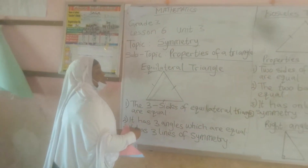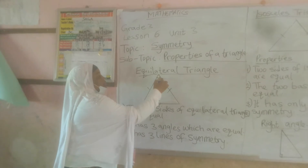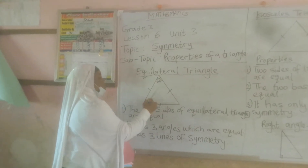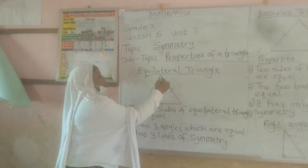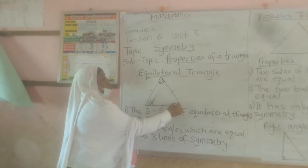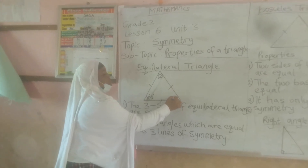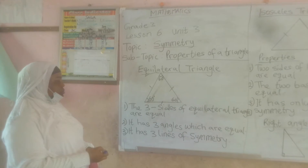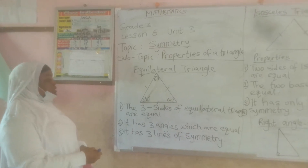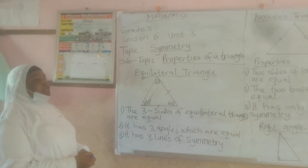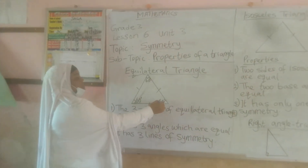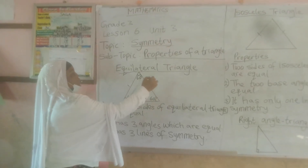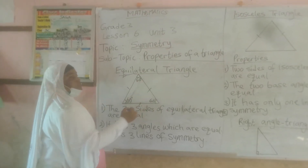For instance, if this angle is 60 degrees, this angle is also 60 degrees, and this angle is also 60 degrees. This is what they call an angle. And then it has three lines of symmetry. You can draw your line of symmetry like this, like this, and like this.